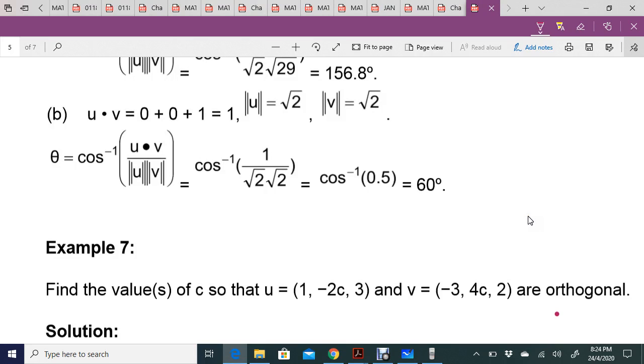Okay, let's look into Example 7. Find the value of c so that u, having a vector of three dimensions, and v, also three dimensions, are orthogonal.